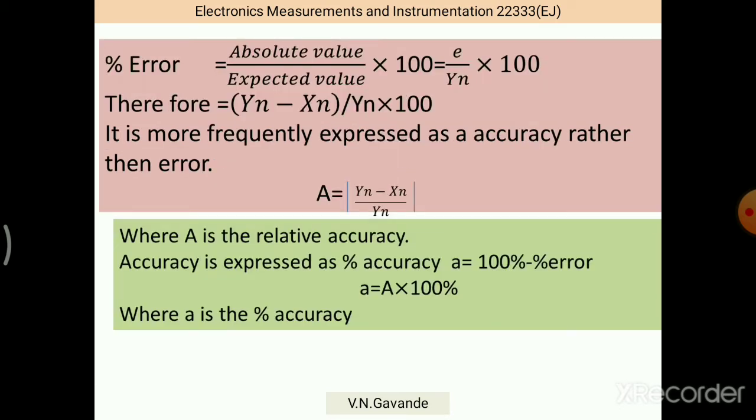Then percentage error is given by this formula: absolute value divided by expected value into 100. Therefore, in bracket, yn minus xn divided by yn into 100. This percentage error is frequently expressed as accuracy rather than error. That is, capital A is the modulus of yn minus xn divided by yn, that is, E divided by yn, where E is the absolute error.